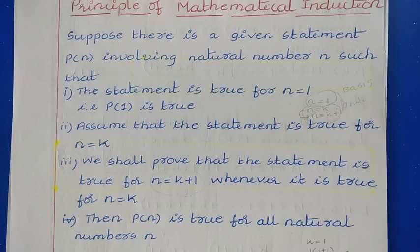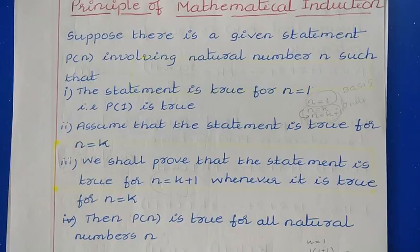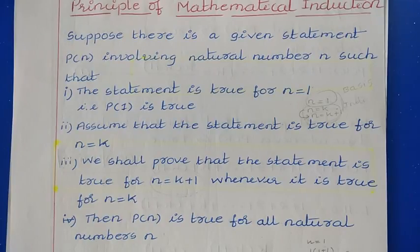So instead of checking for many values of natural numbers, we check only for n equal to 1. Then in the second step we make the assumption for n equal to k, and in the third step, by using that assumption, we try to prove the statement is true for n equal to k plus 1. This is the method we are applying here.